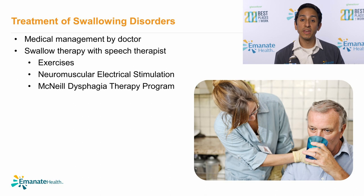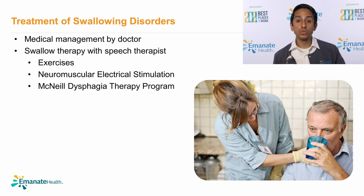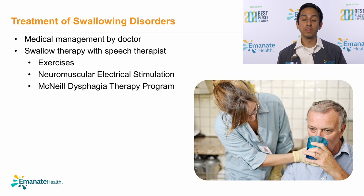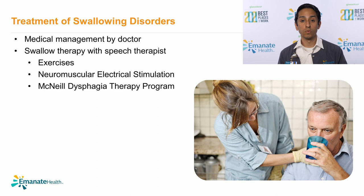In swallowing therapy, we work to make eating safer. We can change the food you eat, how you eat, or do exercises to rehabilitate your swallow. We can use tools like neuromuscular electrical stimulation, which sends small electrical impulses to weak or paralyzed muscles. You can also complete programs like the McNeil Dysphagia Therapy Program, which uses swallowing as an exercise with food to progressively improve your swallow.